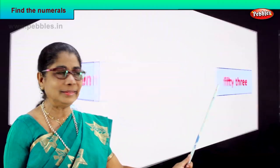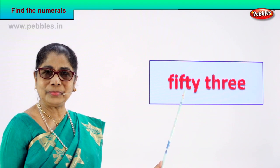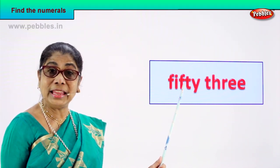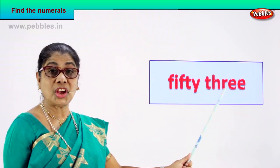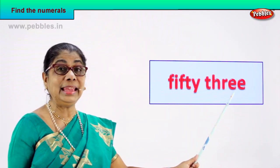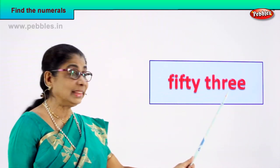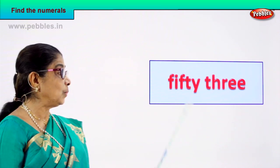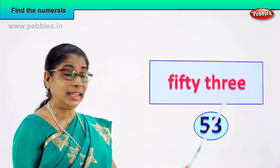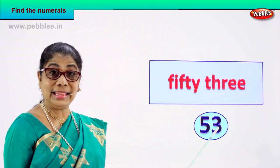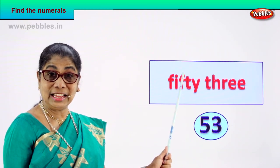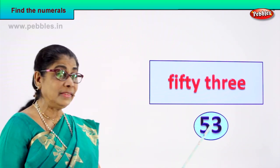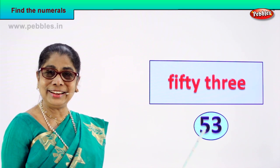F-I-F-T-Y-F-I-V-E... 53. What is written here? 53. So what will be your numeral? 5 and 3. 5 and 3 — 53. This is 53. You read it as 53 and your numeral is 5 and 3, 53. Good!